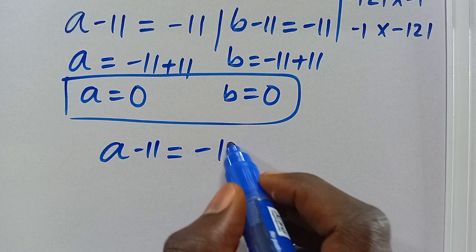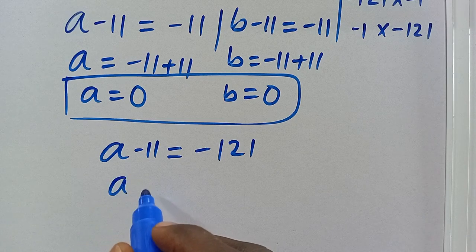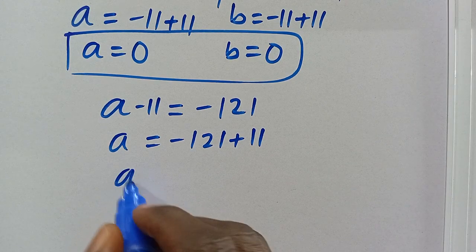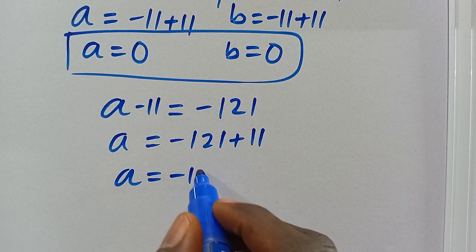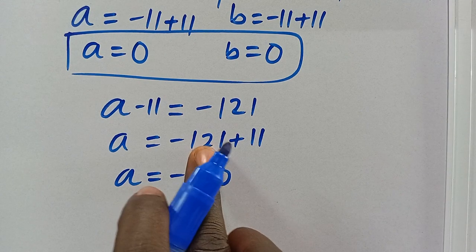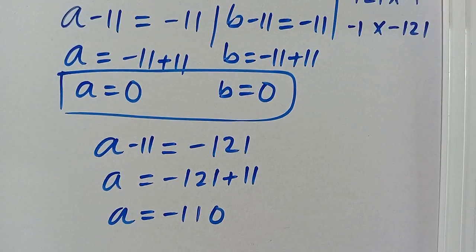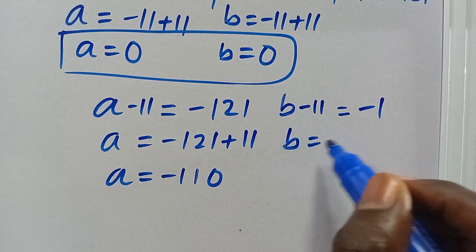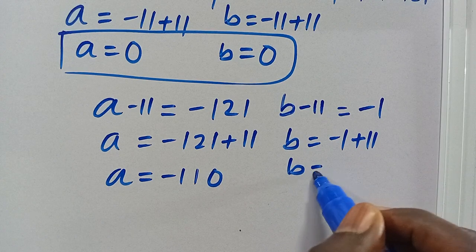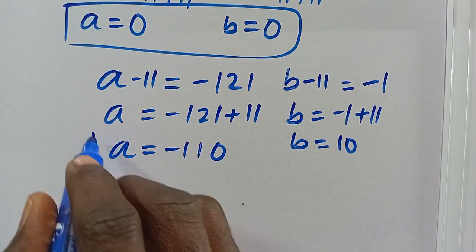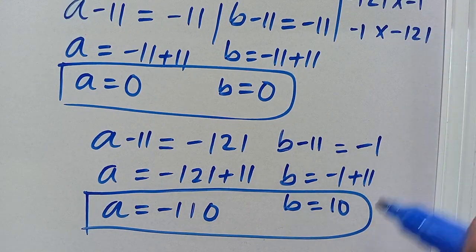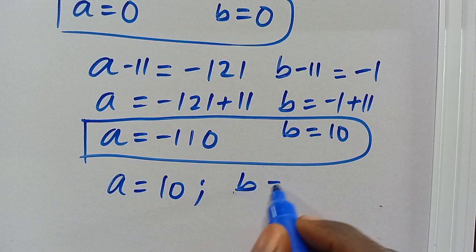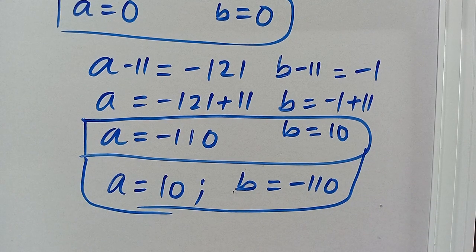For the last negative case: A minus 11 equals minus 121, so A equals minus 121 plus 11, giving A equals minus 110. And B minus 11 equals minus 1, so B equals minus 1 plus 11, giving B equals 10. The reciprocal of this also gives A equals 10 and B equals minus 110 as another solution.